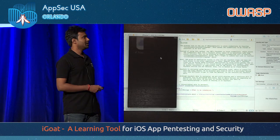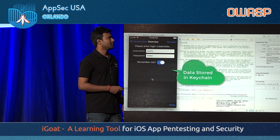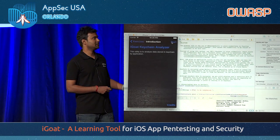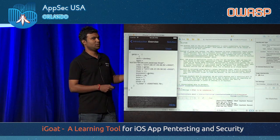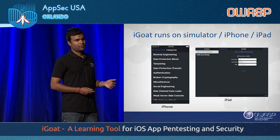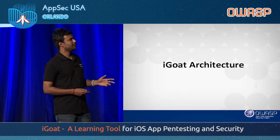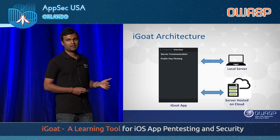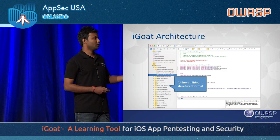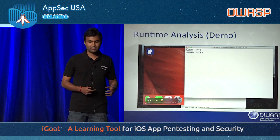After fixing, if you look at the application using the same lesson you'll see that data is now stored in Keychain. We also developed a cool feature — iGOT Keychain Analyzer — where you can analyze the contents of the Keychain stored by that particular application, in this case the username and password. The best thing about iGOT is it runs on all iDevices, simulator, iPhone, and iPad — no restrictions on a particular device. The architecture has one server written in Ruby, and one server hosted on the cloud. Vulnerabilities are in a very structured format, so even a newbie developer can easily add an exercise to the existing project.